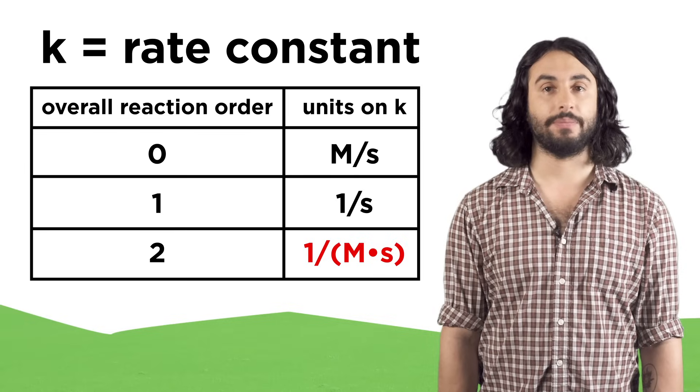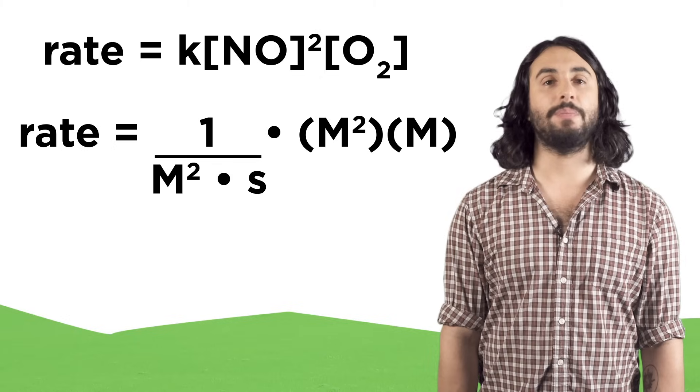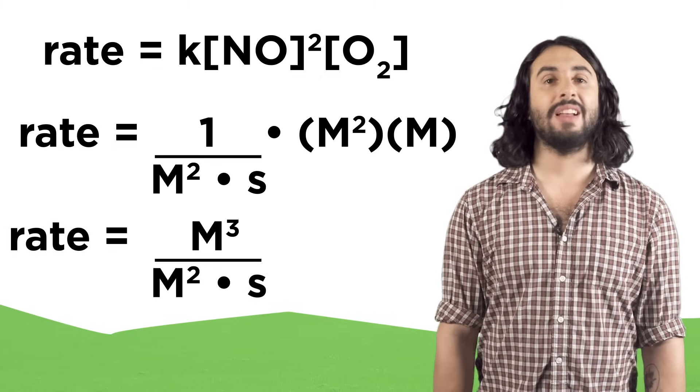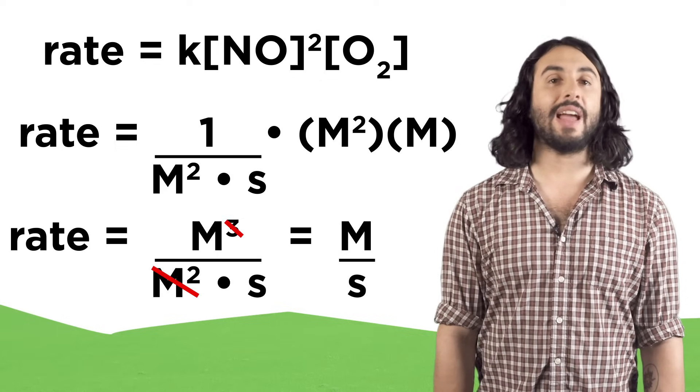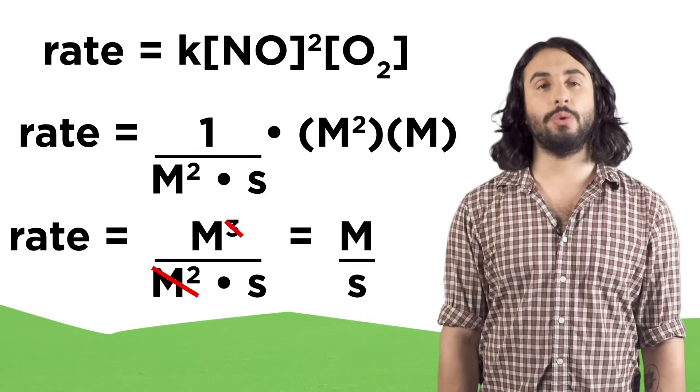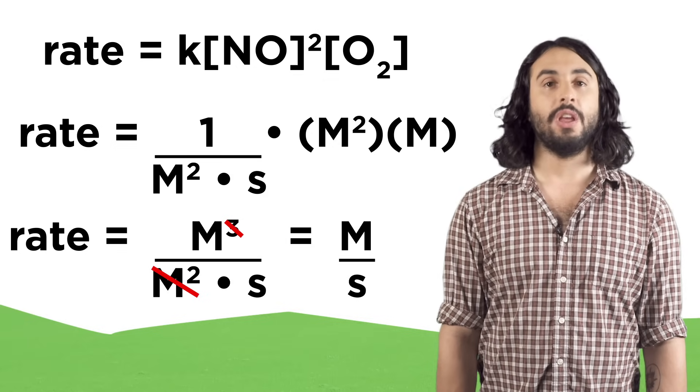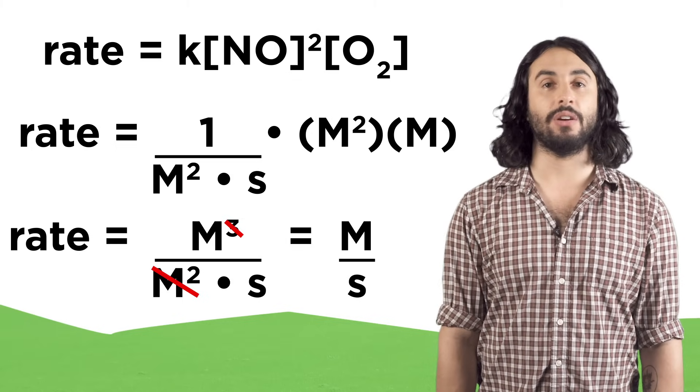Looking at the previous reaction, the units on k must be one over molar squared times seconds since there will be molar cubed in the numerator. Likewise this means that if you know the rate constant you know the overall reaction order. Just see how many powers of molarity have to be in the numerator to result in a rate of molarity per second.